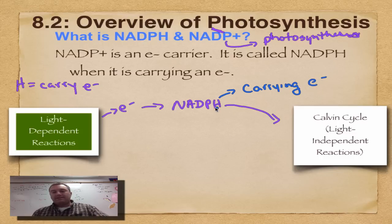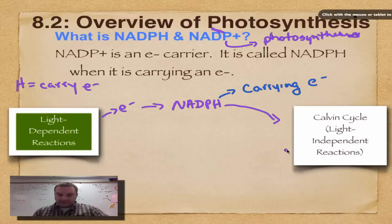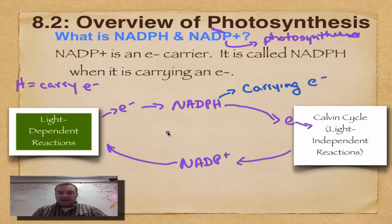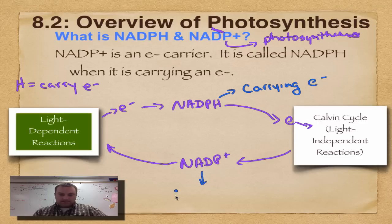NADPH is going to drop off its electrons at the Calvin cycle, and when it does that, it's going to turn into NADP+ because the electrons went there. Now it's going to cycle back — it comes back to the light-dependent reactions where it picks up an electron again. It's a constant cycle, called the NADPH/NADP+ cycle. We'll note: NADP+ is not carrying an electron.